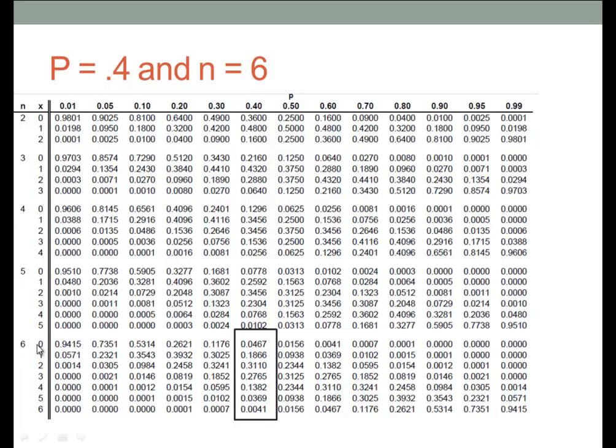So you would just write down 0 through 6 for the possibilities of X, and then the probability of X for each value is in this column that I have drawn a square around.